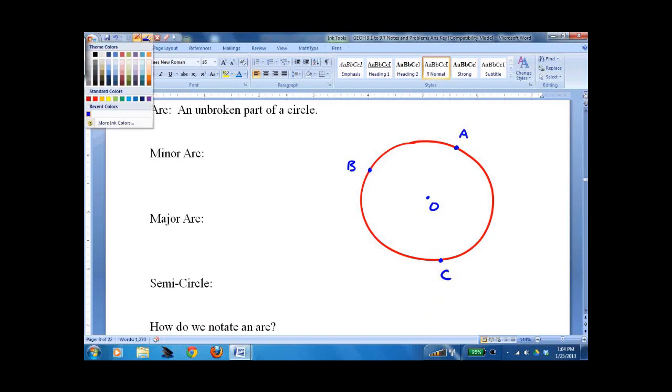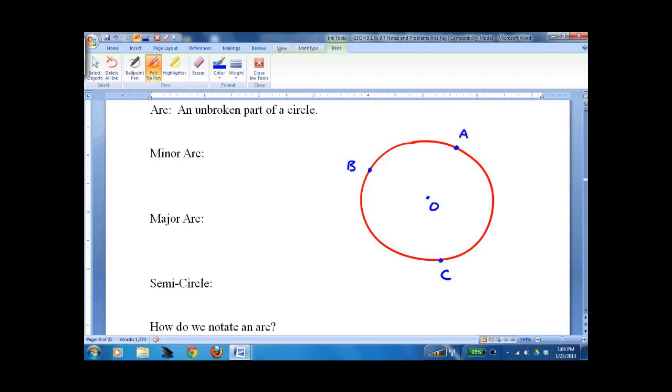And we're going to have to use our highlighter tool so we can show things. So minor arc is right here. Minor arc would be A, B, and we put this little arc up there. That's how we notate.